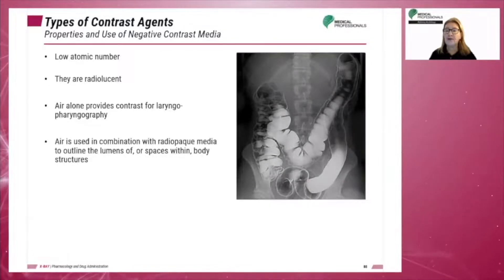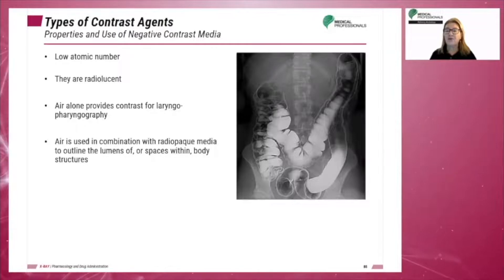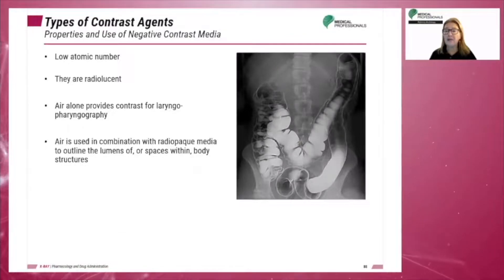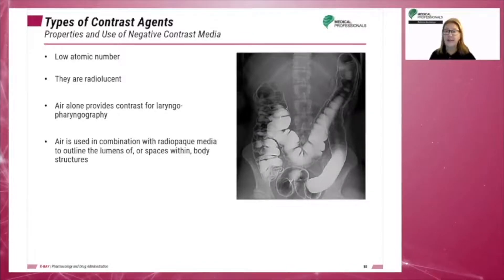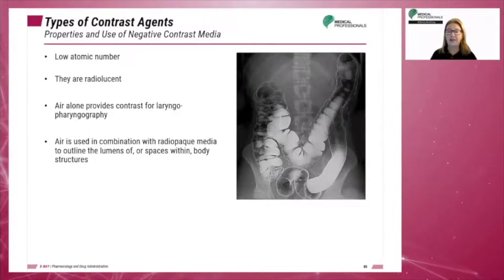Tissues and organs filled with negative contrast will appear blacker or darker than surrounding tissues or organs. Air alone provides contrast for laryngopharynography. However, it is used in combination with a positive radio-opaque media to outline the lumens of or spaces within body structures. For example, it is used with barium sulfate in the double contrast study or used with water-soluble iodinated contrast and injected into joints.